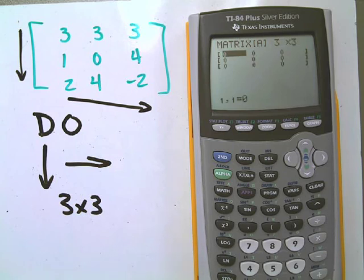A three by three matrix, I need to enter this in, so I simply type the values, hit enter every time. Three, enter, three, enter, three, enter, one, zero, four, two, four, and negative two.